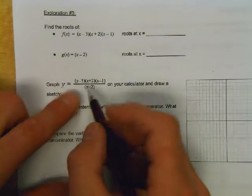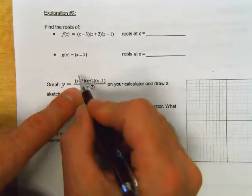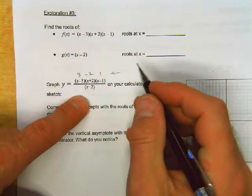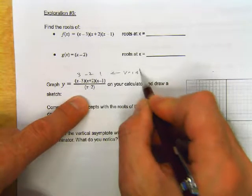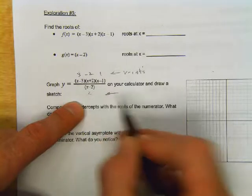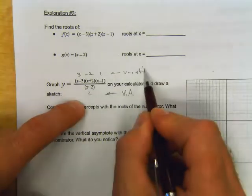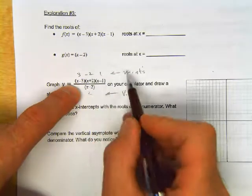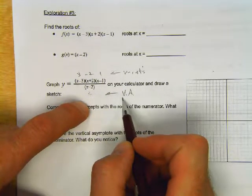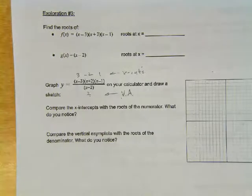Skipping to the function for Exploration 3 — what are the roots of the numerator? Negative 2, positive 1, and 3. What do you expect at those three locations? X-intercepts. And the roots of the denominator? 2. What do you expect at 2? A vertical asymptote. That's the lesson for today: the roots of the numerator give you x-intercepts; the roots of the denominator give you vertical asymptotes. Your assignment is to finish this packet.